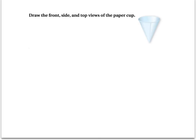Last thing. Another type of problem you're going to see on your homework tomorrow. It says draw the front, the side, and the top views of a paper cup. So you've got a paper cup here. If you look at it from the front, Emma, what kind of shape do you think we'd see? Triangle? That's right.